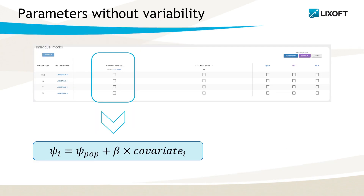When a parameter does not have random effects, the individual parameters are easy to calculate. They are simply the population values psi-pop plus the effect of covariates. This corresponds to both the mode and the mean of the conditional distribution, which in this case is infinitely narrow.